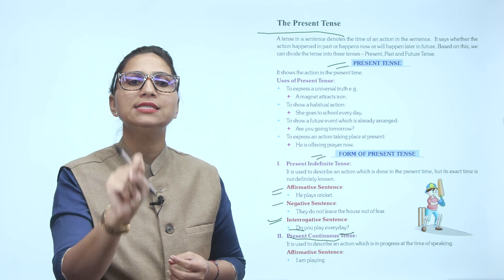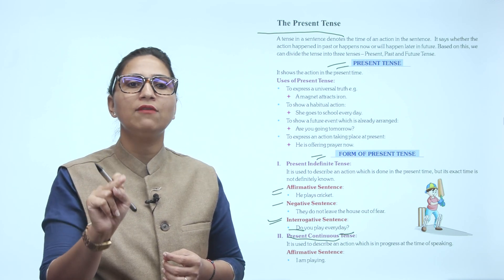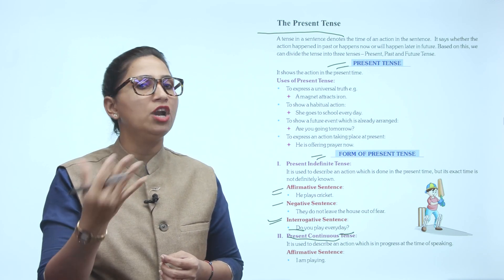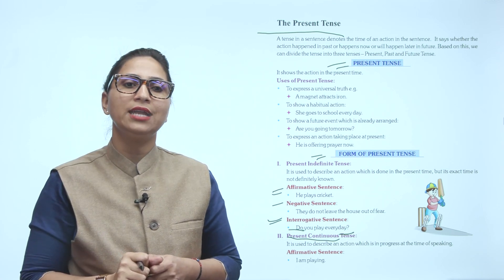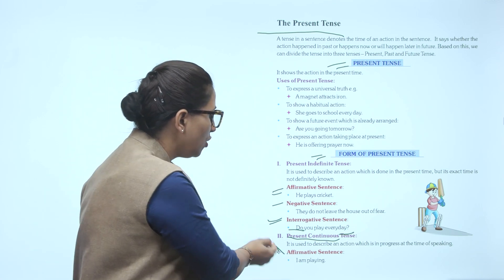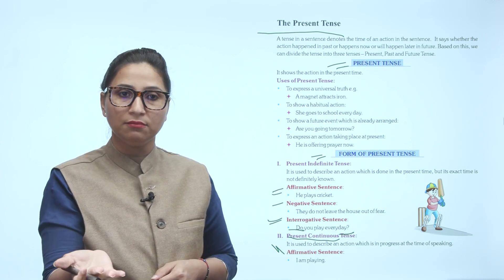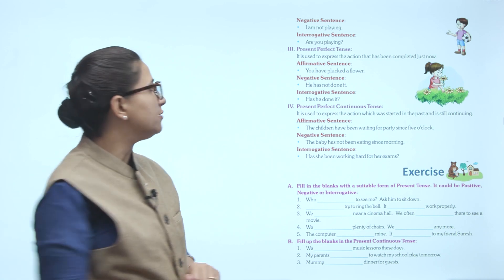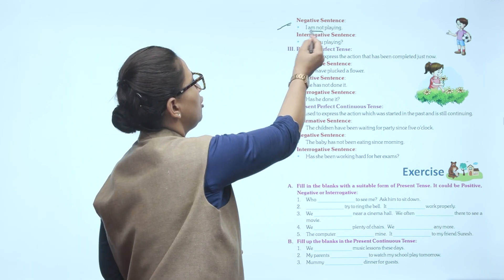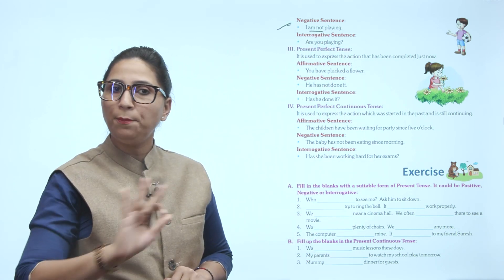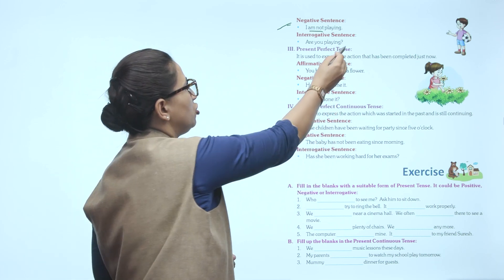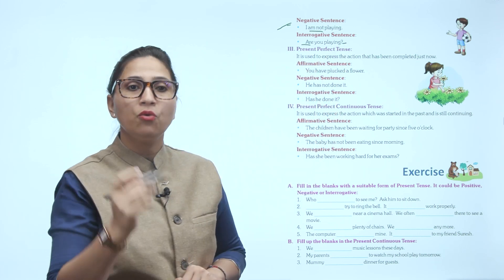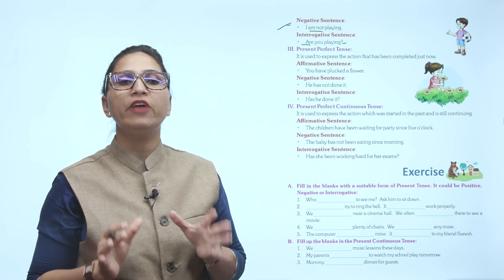This is present continuous tense, and we will use it in affirmative, negative, and interrogative sentences. First, affirmative: I am playing. Negative sentence uses 'not': I am not playing. Interrogative sentence uses a question mark and starts with a helping verb.